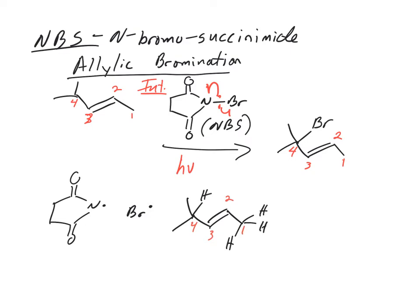Bromine is going to take that, and in this propagation step, we're creating a new radical. We actually create a tertiary allylic product. What's that going to look like? A tertiary allylic radical with the dot right there. We renumber our carbons one, two, three, four, and of course we also made HBr.